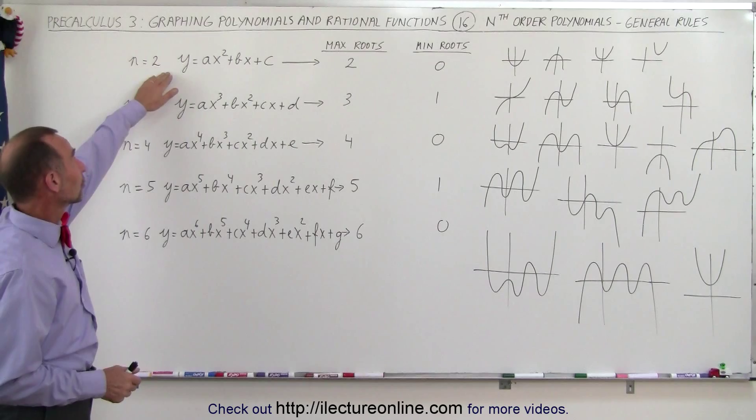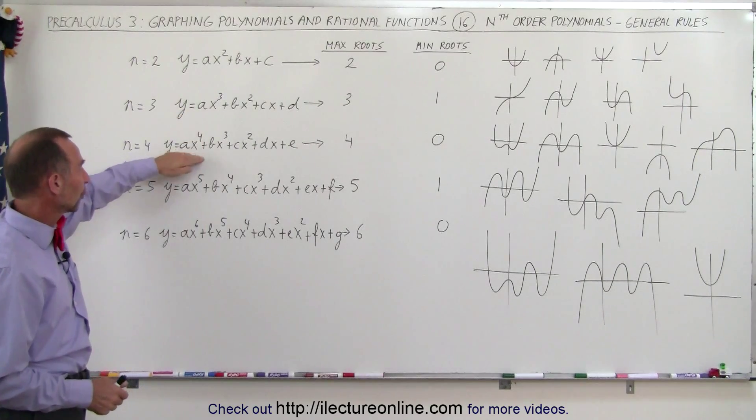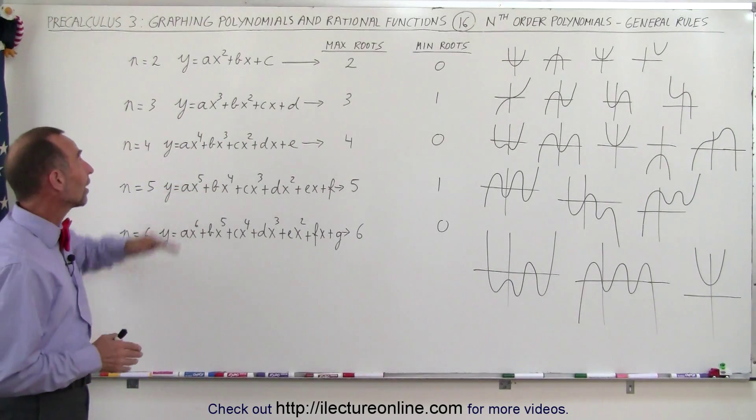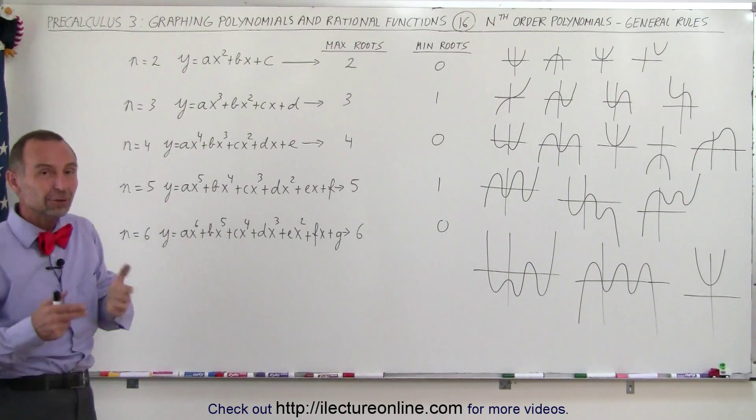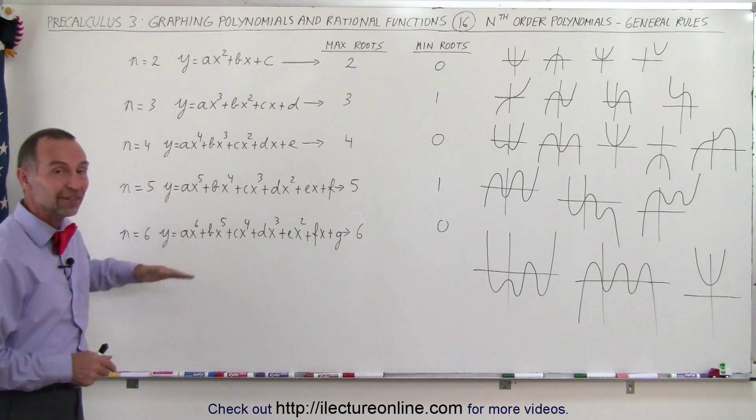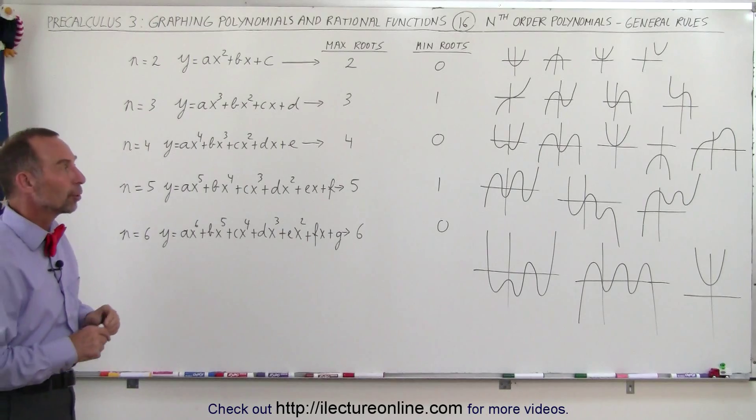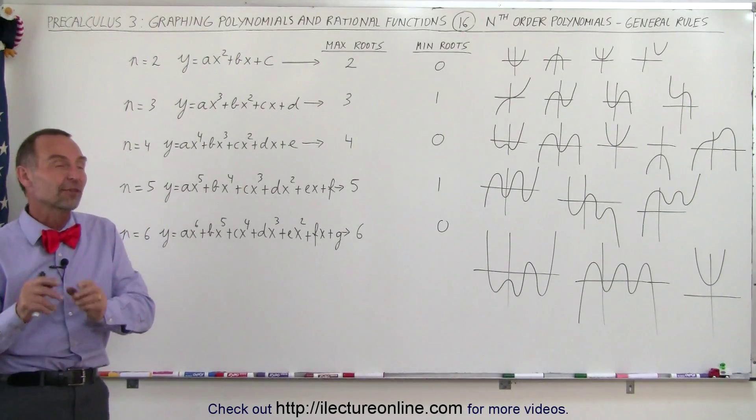We can encounter quadratic, third order, fourth order, fifth order, sixth order, and so forth. Notice that second, fourth, and sixth are even orders. Third, fifth, seventh, ninth, and so forth are odd-order polynomials, and they do have specific characteristics.